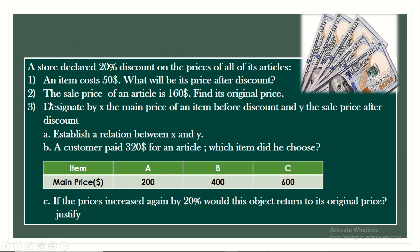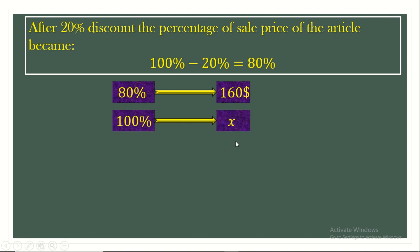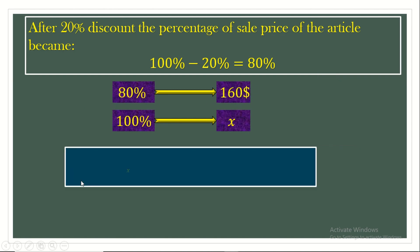Now for part two. The sale price of an article is $160. Find its original price. Keep in mind that after a 20% discount, the percentage of the sale price is 80%. So 80% represents $160. The original price has a percentage of 100%, which we call X. X equals 100% times $160 over 80%, and solving this gives X equals $200.